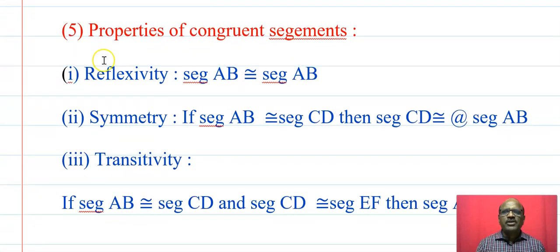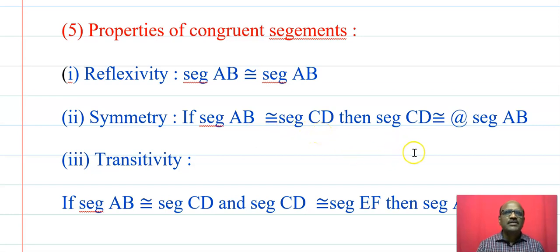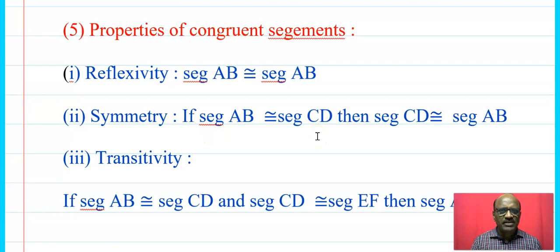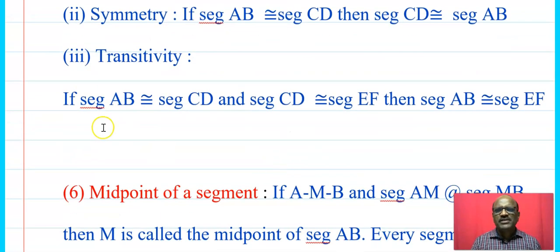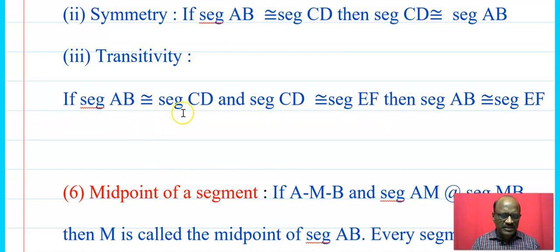Now the properties of congruent segments. First is reflexivity: segment AB is congruent to segment AB — every segment is congruent to itself. Next is symmetry: if segment AB is congruent to segment CD, then segment CD is congruent to segment AB. Next is transitivity: if segment AB is congruent to segment CD, and segment CD is congruent to segment EF, then segment AB is congruent to segment EF.